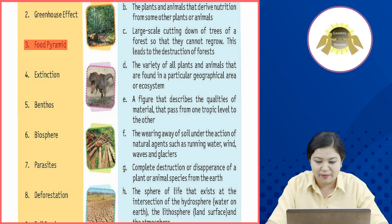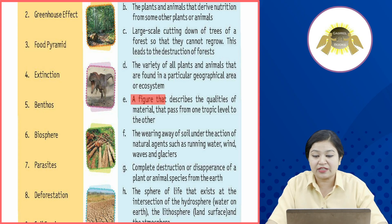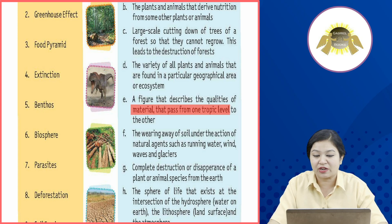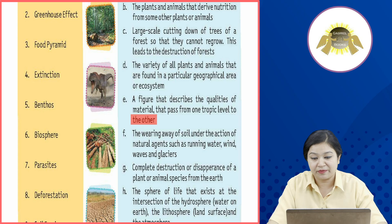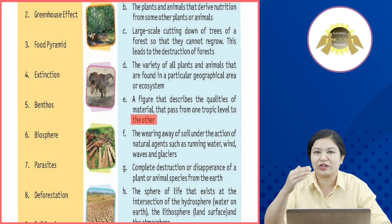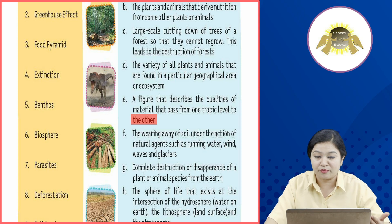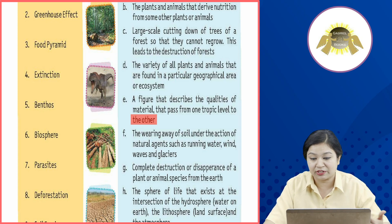Third: Food Pyramid. A food pyramid is a figure that describes the quantity of material that passes from one trophic level to the other. This is a pyramid in which you have food levels showing the quality of material at each level.